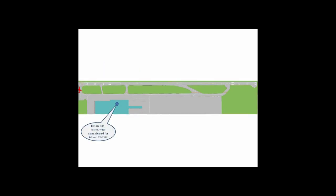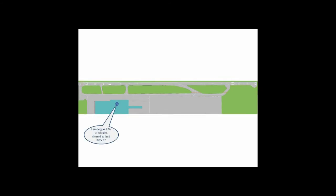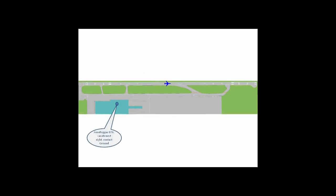Tower: 'Iri Air 001, wind calm, cleared for takeoff runway 07.' Tower: 'Wind calm, cleared to land runway 07.' Then for the arriving aircraft: 'Air Reg 876, Air Reg 876, vacate next right, contact ground.'